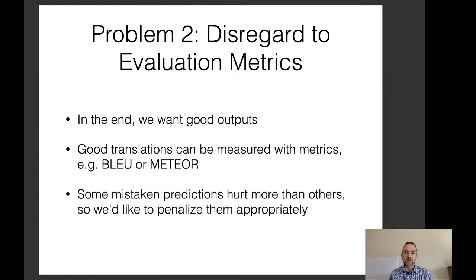Another issue is that maximum likelihood training has disregard for the evaluation metrics we want in the end. Good translations can be measured with metrics such as BLEU, METEOR, or F1 score. Some mistaken predictions may hurt more than others, so we'd like to penalize them appropriately. For example, if using a machine translation metric that considers paraphrases, a paraphrase output may not be penalized much, whereas outputting a wrong content word might be penalized greatly. Maximum likelihood makes no such distinction — it treats all words and sequences as equal.